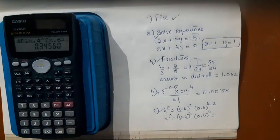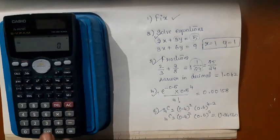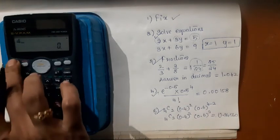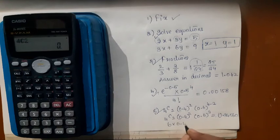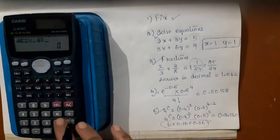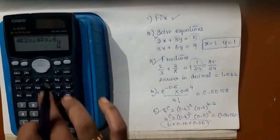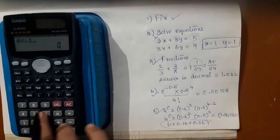I am doing it again, listen. 4 shift divided by, it gives C2. Into 0.4 power 2 into 0.6 square. I get the answer 0.34560. You need not do it separately because you are using a scientific calculator. You can ask him to do everything directly.